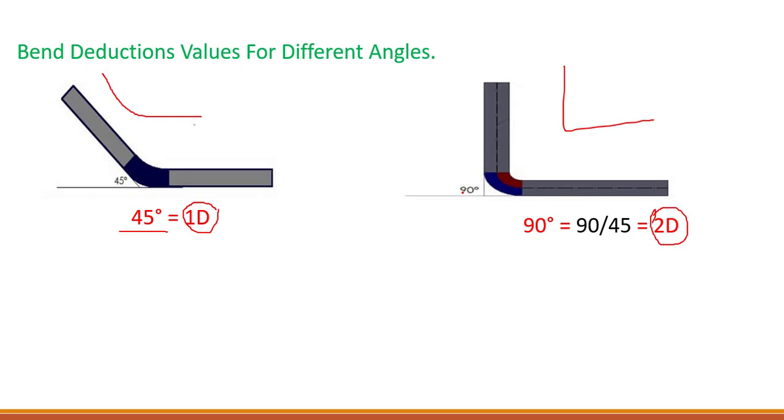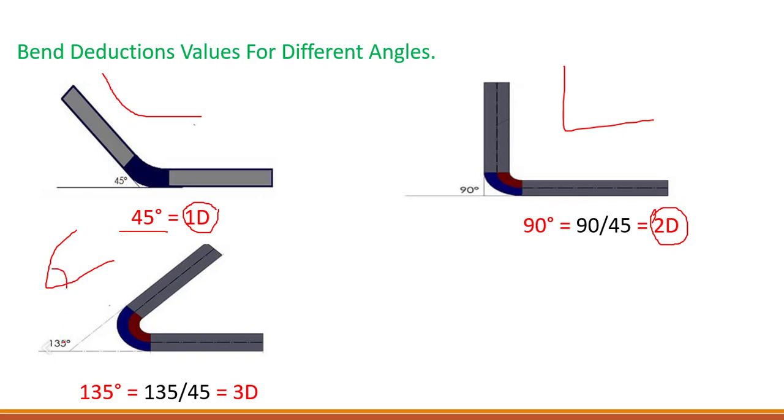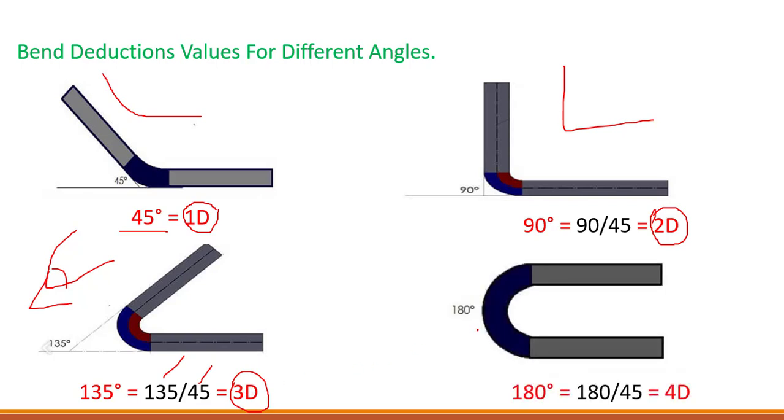If it is 90 degrees, if it is 100 degrees, if it is 135 degrees, all you need to do is divide it by 45 to find out the bend deduction. Important. Now, let's suppose we have the bend as 135 degrees. If we bend a bar at 135 degree angle, then our bend deduction will be 3D, meaning 135 divided by 45 equals 3D, 3 times diameter of bar.